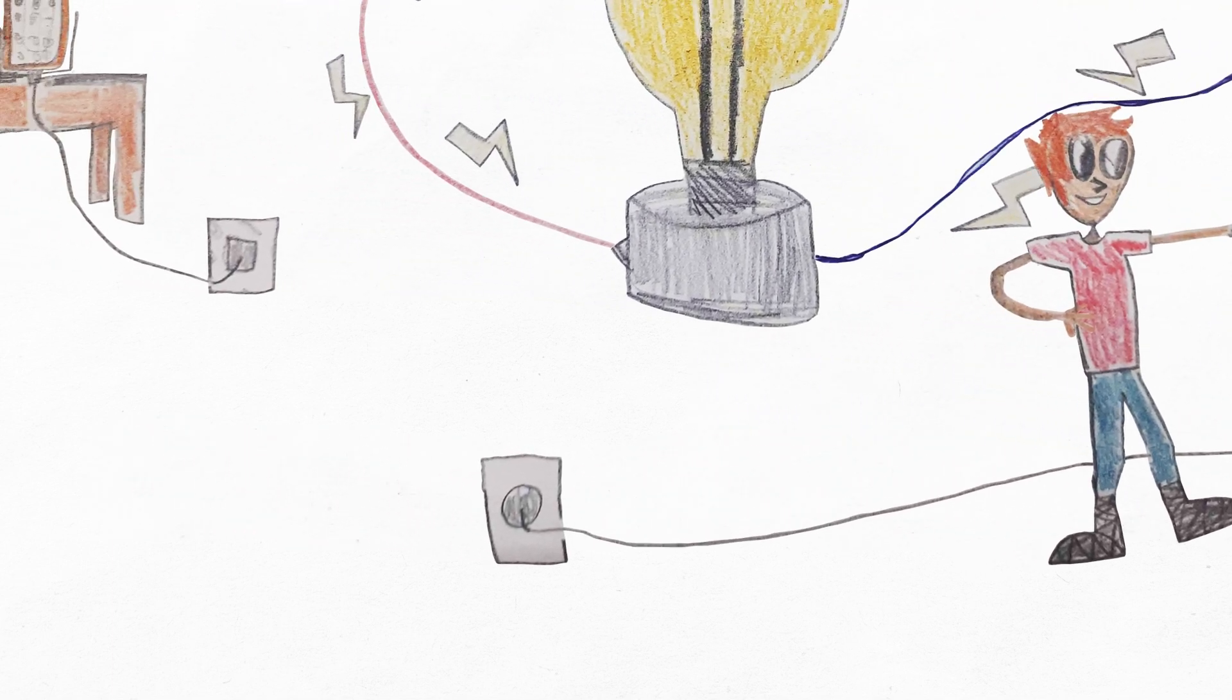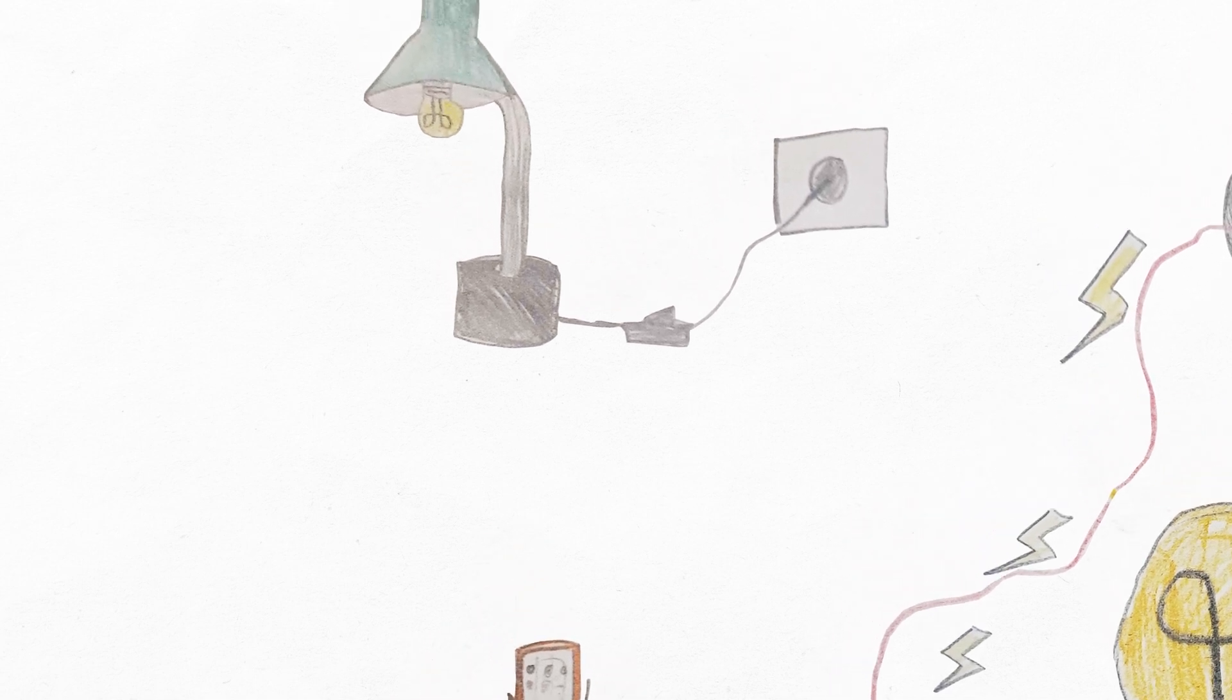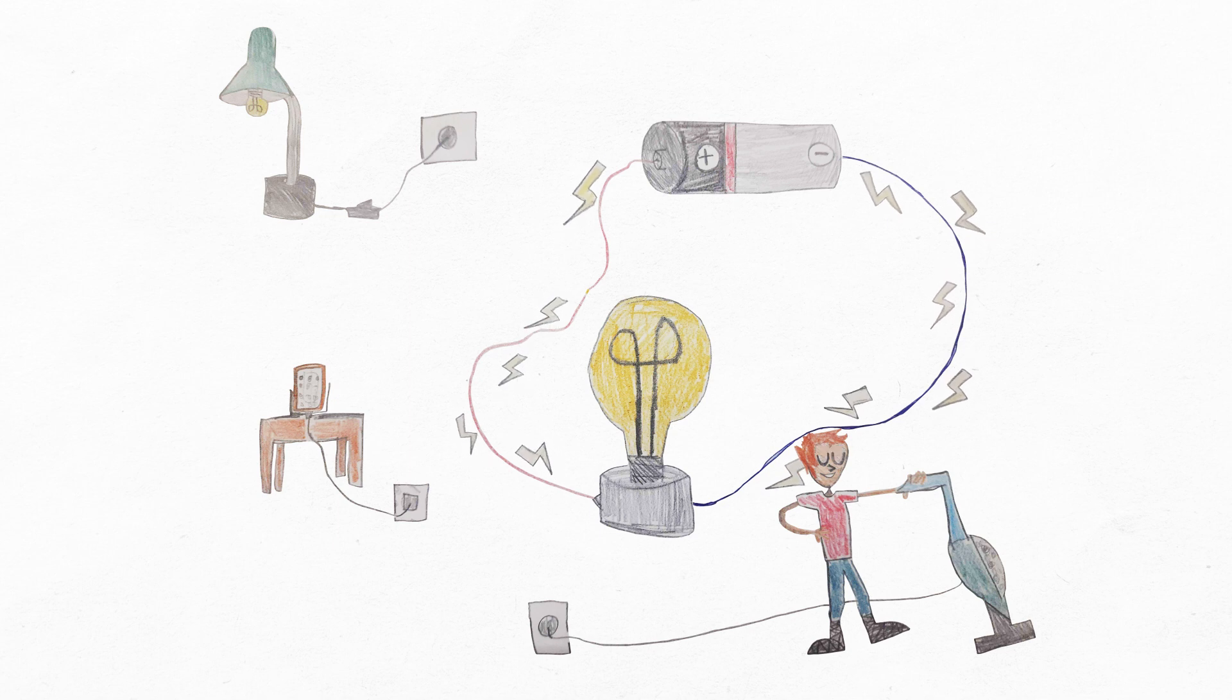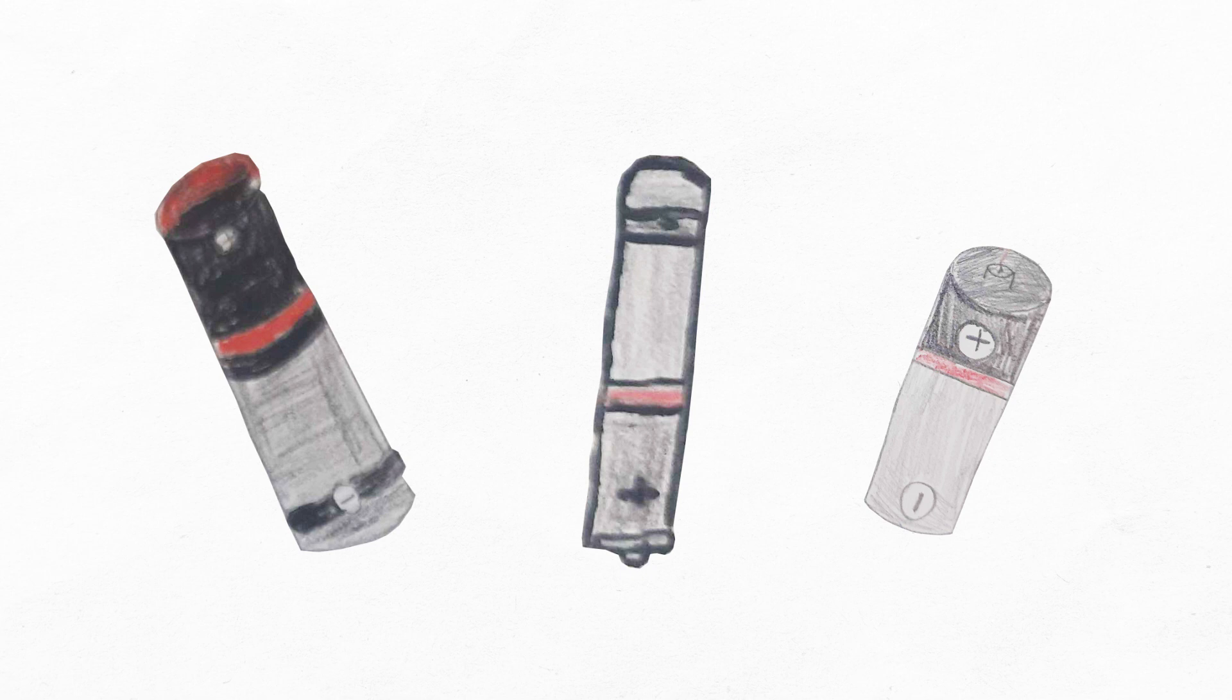To make the components in a circuit work, a circuit needs a source of energy. We can use electricity or batteries as a source. Many people use the word cell and battery to mean the same thing.